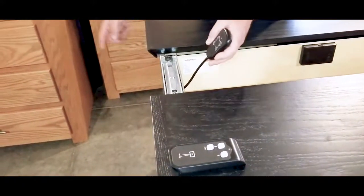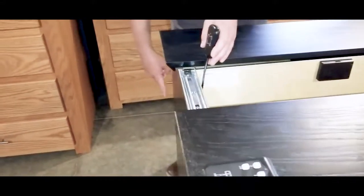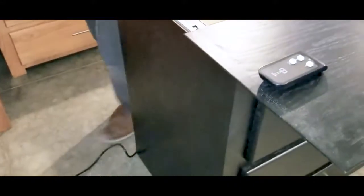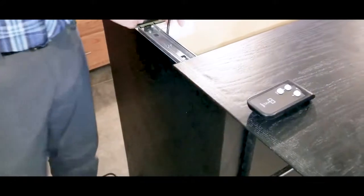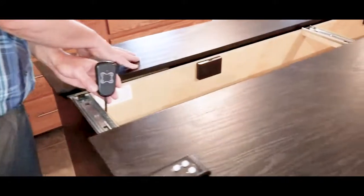This wire goes down to the bottom right-hand side where the plug comes out and this remote allows you to program the upper and lower thresholds of this shelf.